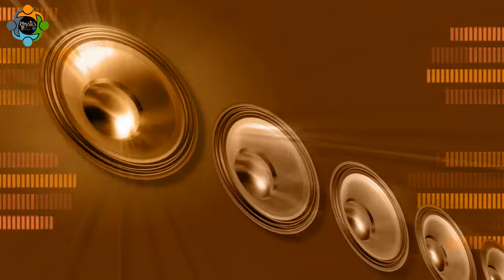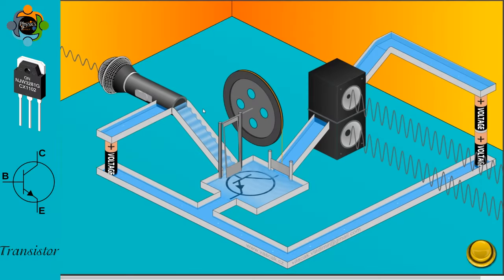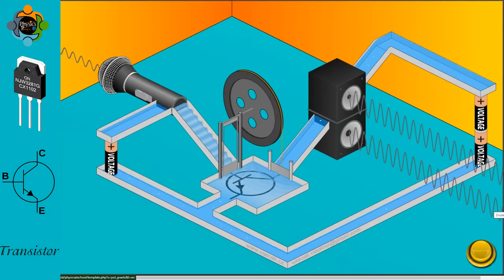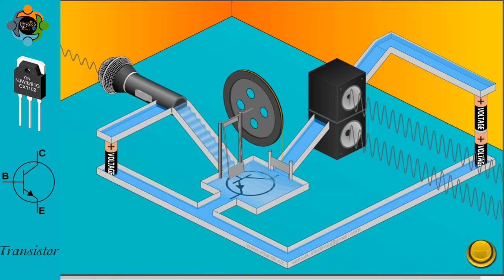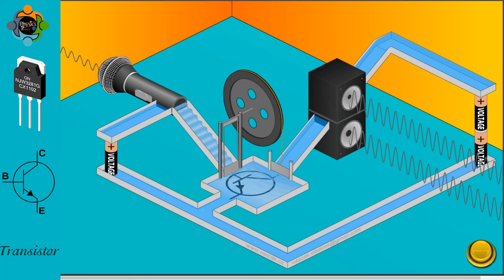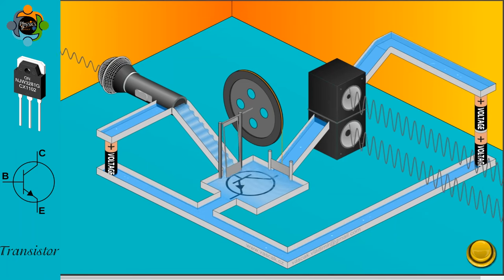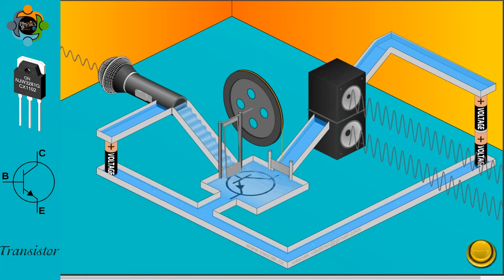This amplification involves the transistor controlling the current flow or voltage, increasing the strength of the input signal. As a result, the amplified current through the loudspeaker produces corresponding sound, showcasing the transistor's role in amplifying and regulating electrical signals for sound amplification.